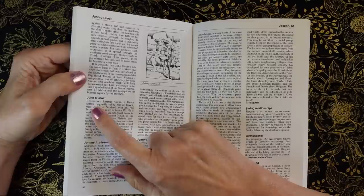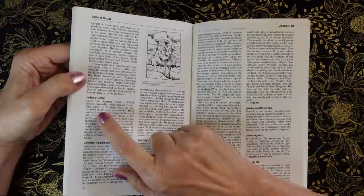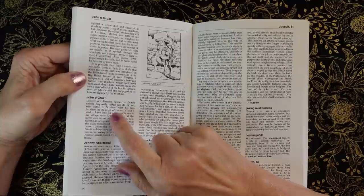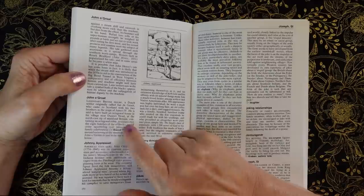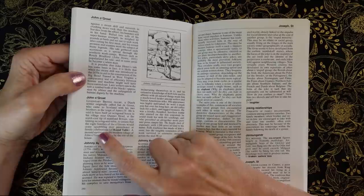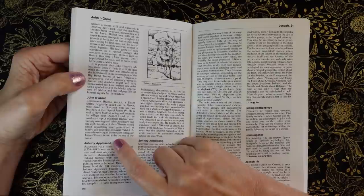John O'Groote, legendary British figure, a Dutch settler originally called Jan O'Groote, who came to Scotland with his two brothers in the reign of James IV. He is said to have built an octagonal house in his village near Donnethead, at the north-east tip of mainland Britain, containing an octagonal table, to ensure that the eight families of the O'Grootes would cease squabbling over precedence at the family celebrations. A mound surviving in the modern village of John O'Grootes is said to be the site of the house.